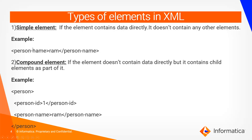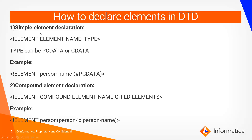Next, what are the types of elements in XML? There are two types: simple element and compound element. A simple element is one that contains data. A compound element does not contain data but contains child elements. For example, 'person' doesn't contain data — it has child elements person-id and person-name. Person-id contains '1' and person-name contains 'Ram', so those are simple elements, and 'person' is a compound element.